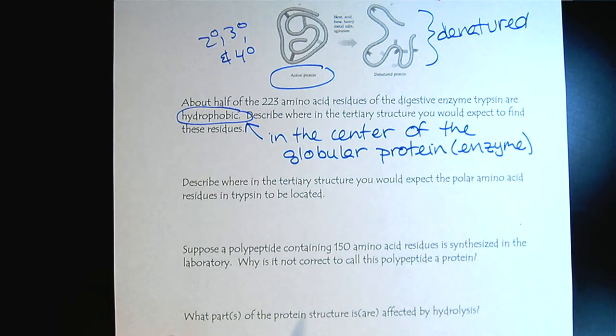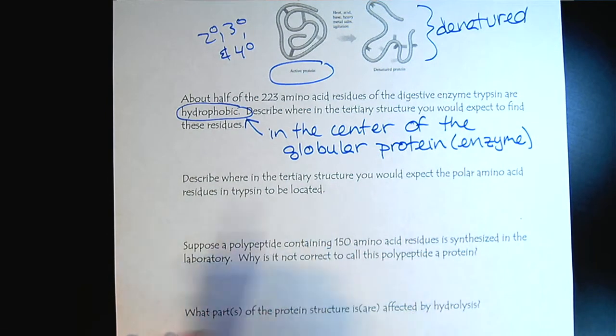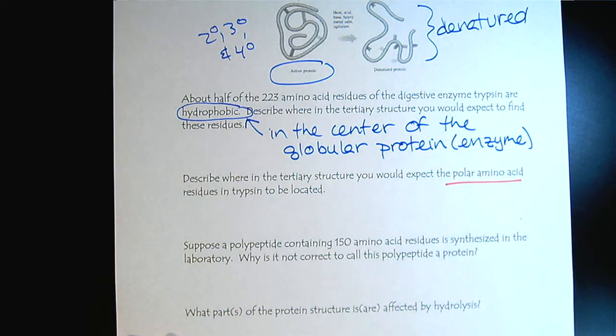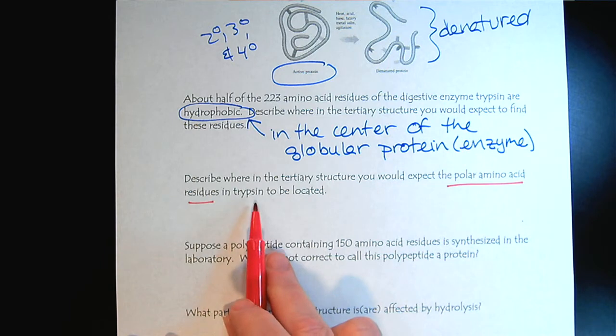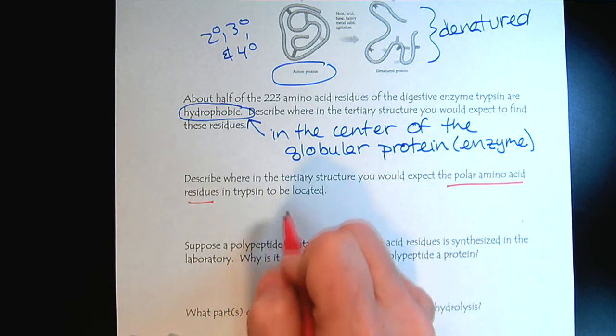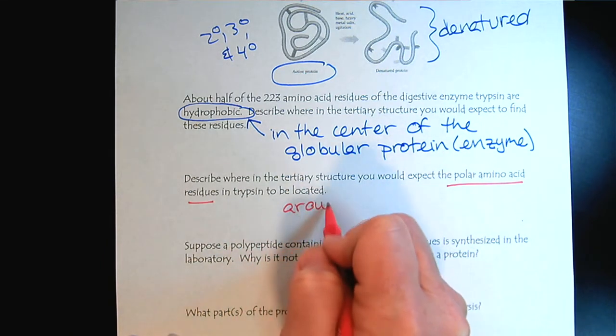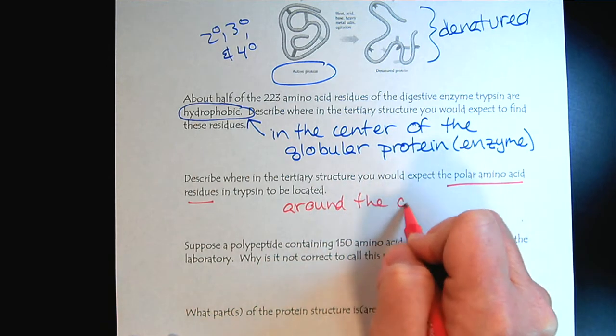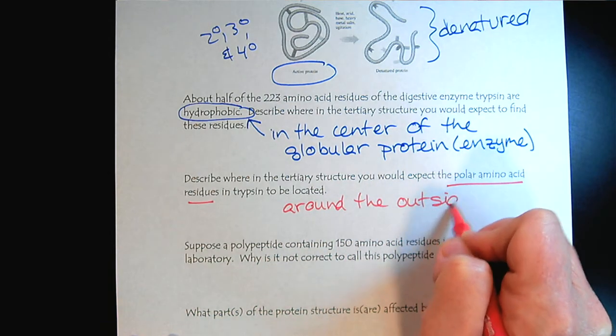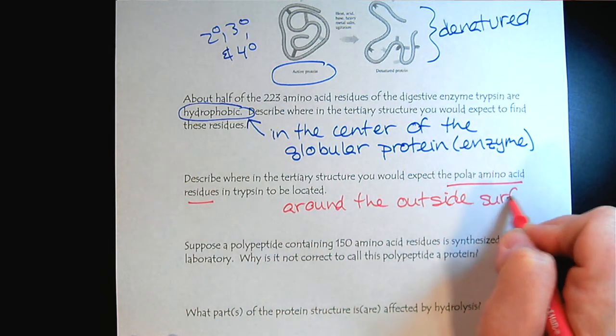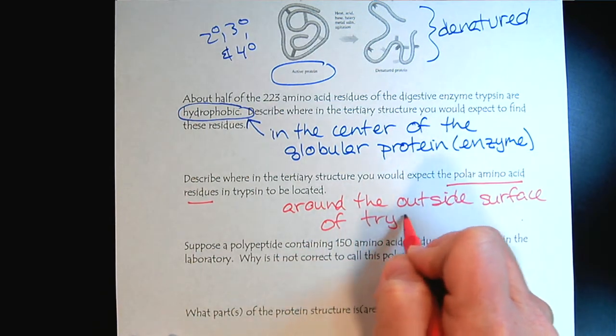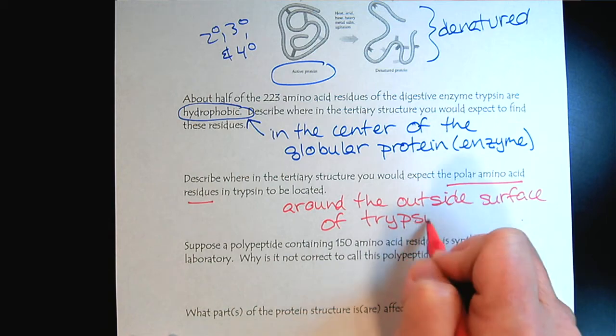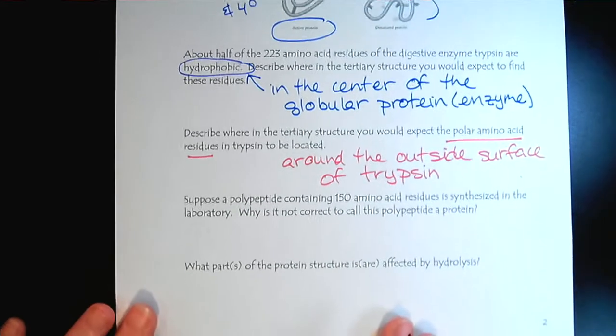Now, if we look at the polar amino acid residues of trypsin, where would they be? Those are going to be around the outside.